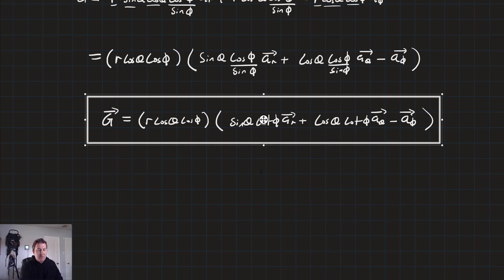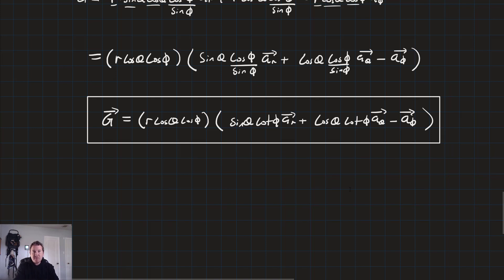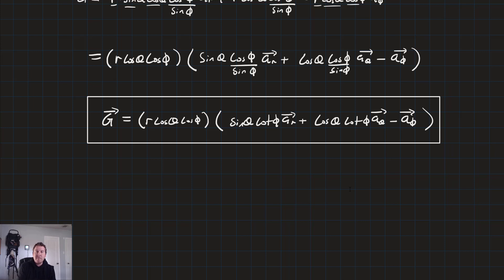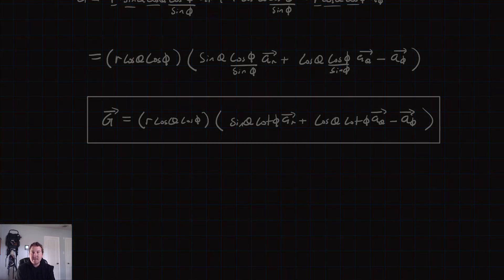So there's an example of how we convert vector fields in rectangular coordinates into spherical coordinates. While there are a lot of symbols and a lot of writing — it's very tedious — no particular step is all that complex or difficult. You just have to sit down, take some time, and solve these problems. As always, if you have any questions, comments, or concerns, please let me know, and I'll see you in the next lesson.